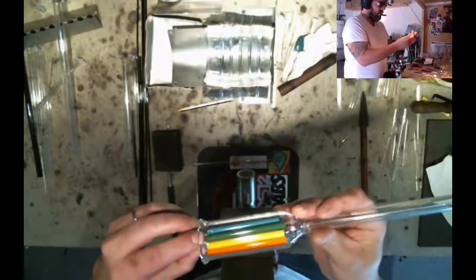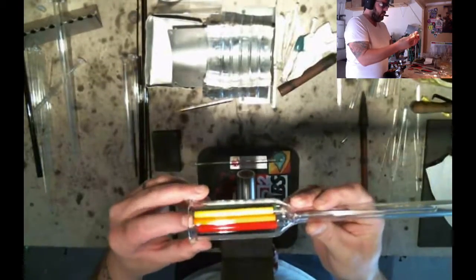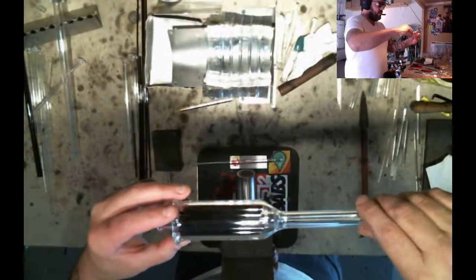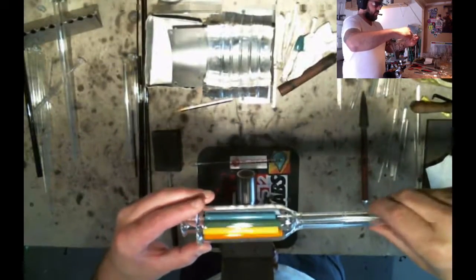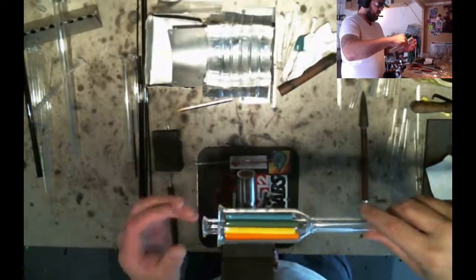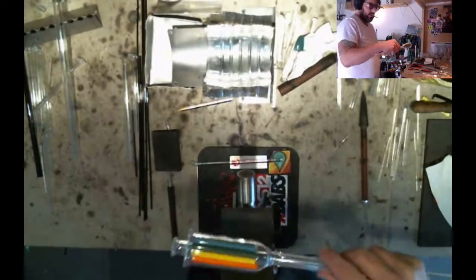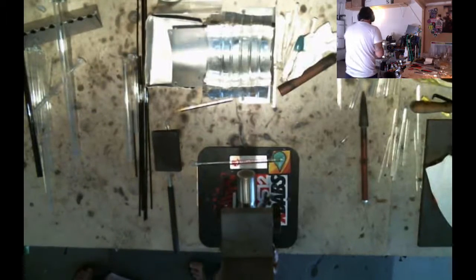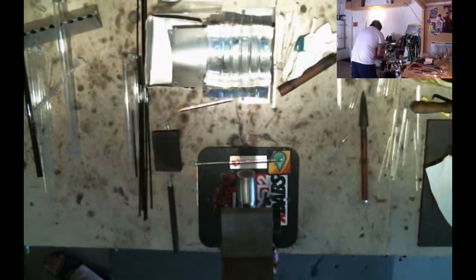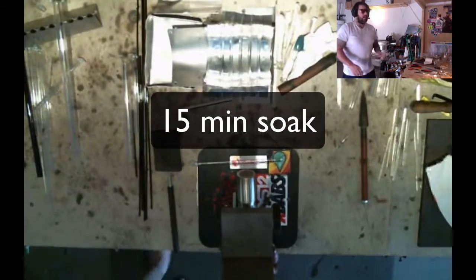Once you get everything in, make sure everything is nice and plumb. There's our stock. Rainbow stock. So, we'll put this in the kiln, about 15 minutes, and then we'll come back and lump all this in together. We'll be right back.